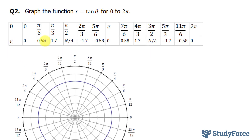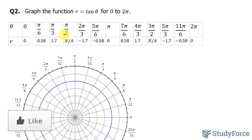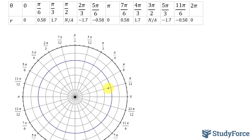I've gone ahead and plotted my r values for each of the corresponding angles. We discovered that when we evaluated tangent at π/2 and 3π/2, we get no output, so I put NA for those. Our radius ranges from negative 1.7 all the way to positive 1.7, so a good range would be between 0 and 2. To do that, we'll break this down into increments of thirds: 1/3, 2/3, 1, 1 and 1/3, 1 and 2/3, and 2.